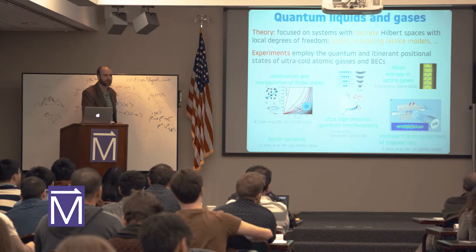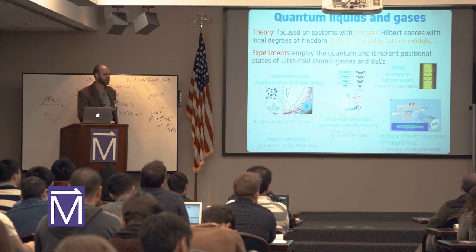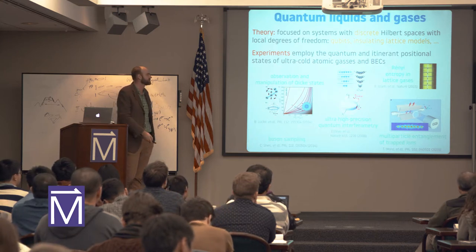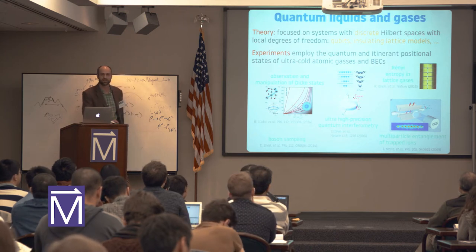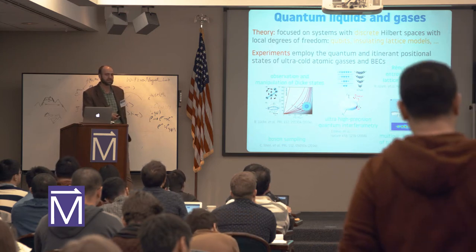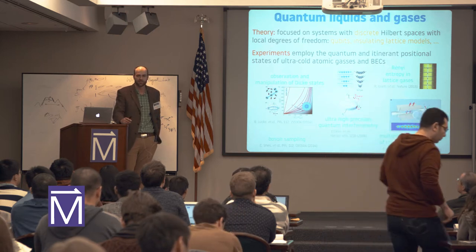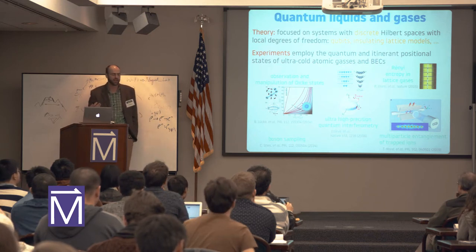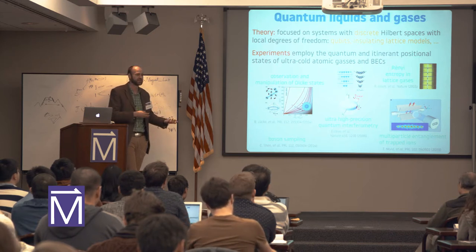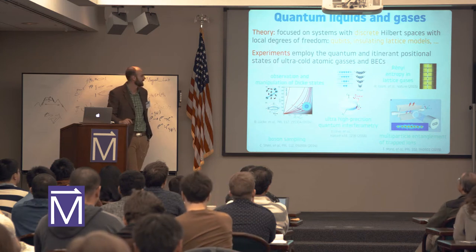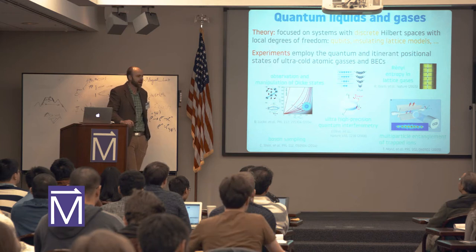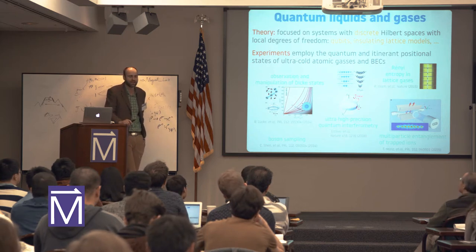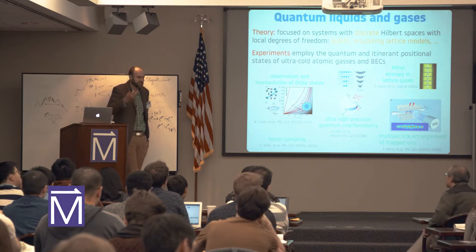In particular, I'm going to focus on quantum liquids and gases. A lot of the theory has focused on systems with discrete Hilbert spaces and local degrees of freedom — things like localized qubits or insulating lattice models. But a lot of experiments, especially on the cold atoms side and ions, can employ the itinerant positional state. The main theme of this talk is understanding how, if I have identical quantum particles that can move in space or on a lattice, what does that bring in terms of entanglement? I'm going to come full circle at the end and go back to helium — the paradigm quantum liquid — and ask: can we determine how much entanglement there is in helium? The interest for me is that this is a macroscopic quantum wave function that can be easily prepared in a lab by just cooling some helium down.